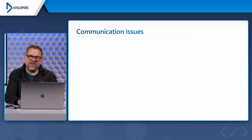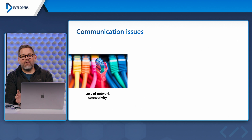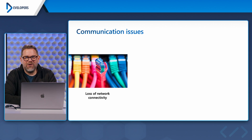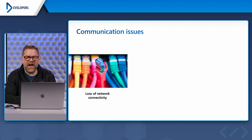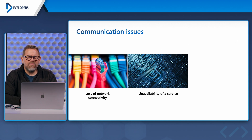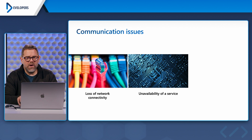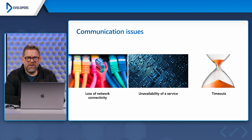What are some of the communication issues that happen with distributed applications? First, loss of network connectivity — that's probably the most common. The internet can go down between the web browser and the server, between multiple Azure regions, or between an Azure region and a third-party API. The key is you have to consider that it will go down and plan around it. Next is unavailability of a resource — SQL Server might just go down. Finally, timeouts — a bad query that takes forever to complete. You have to consider a timeout. Those are three examples of communication issues that might happen.